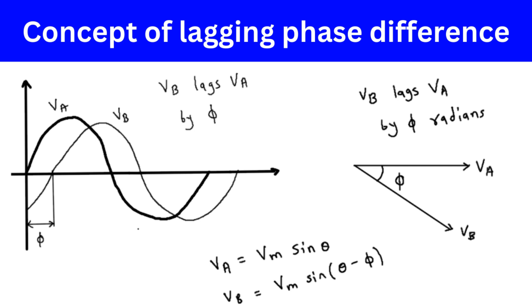Specifically, the angle between the two phasor vectors will be Φ, which represents the lagging phase difference between Vb and Va.